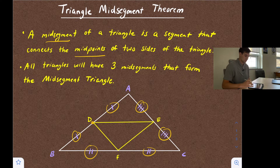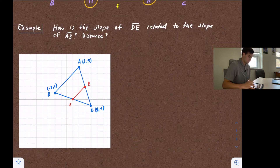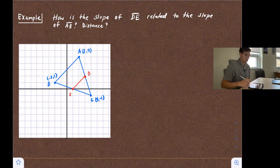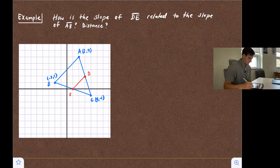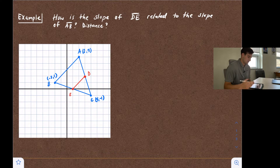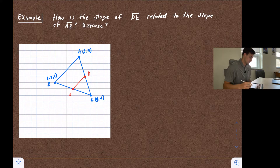Let's look at an example to figure out the characteristics of the mid-segment theorem. Here we have triangle ABC with a mid-segment DE. The question is: how is the slope of segment DE related to the slope of segment AB? And how are the distances related? Let's talk about the slope first.